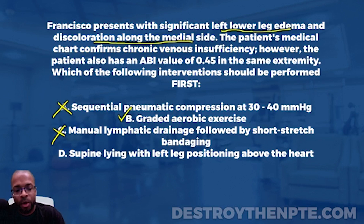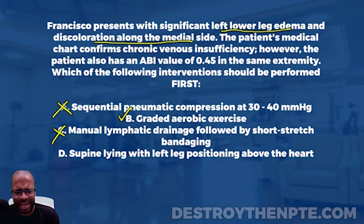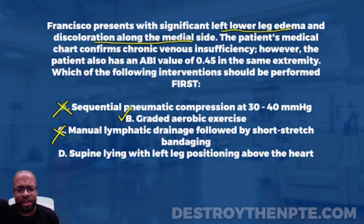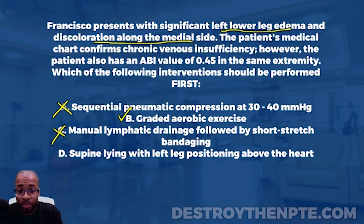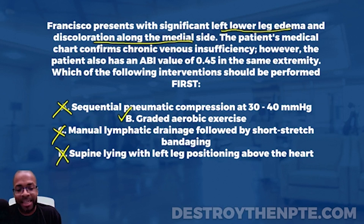Answer D is supine lying with left leg positioning above the heart. What are we really trying to do in that situation? We're trying to drain the lower extremity — bring the edema back to the heart. Is that for arterial insufficiency or venous? It's for venous. Back to our principle: we address arterial insufficiency first, so D can't be the right answer either.